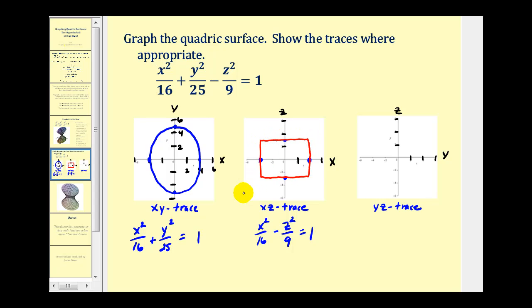And then we'll sketch the diagonals of the rectangle. These will be the asymptotes. And again we know because the positive part is the x part, this hyperbola will open left and right. So here's one vertex opening to the right. Here's the other vertex opening to the left. This would be the xz trace.